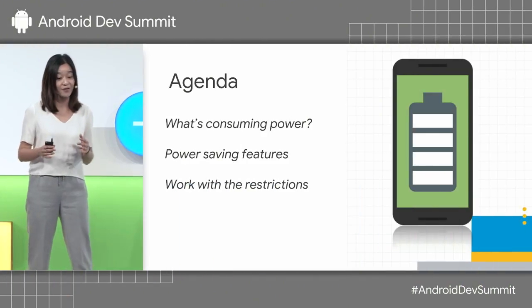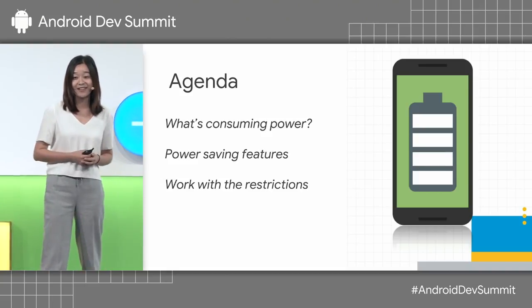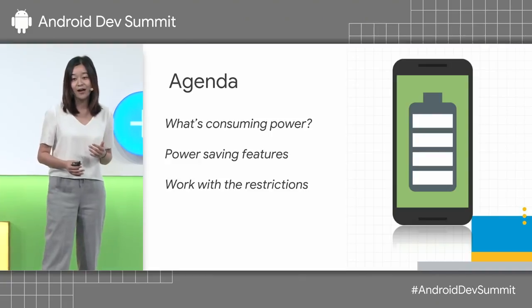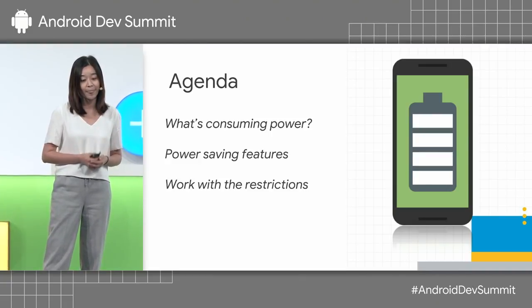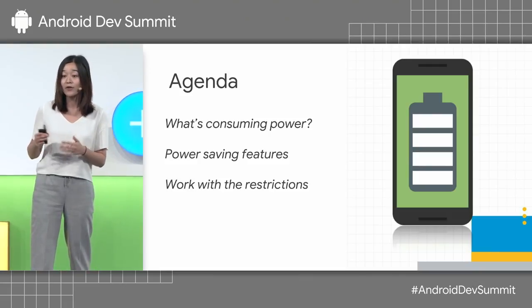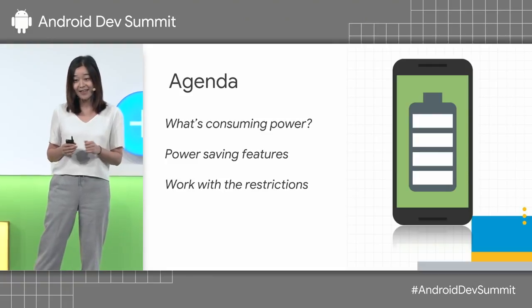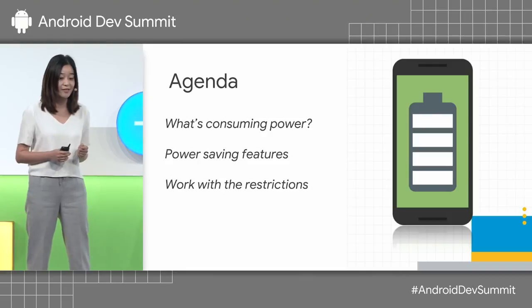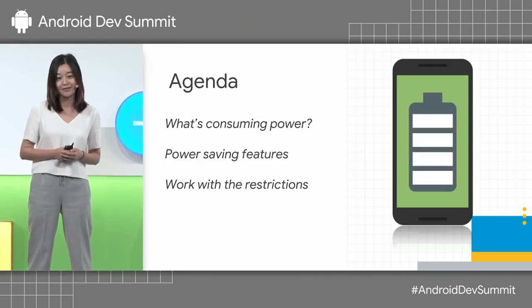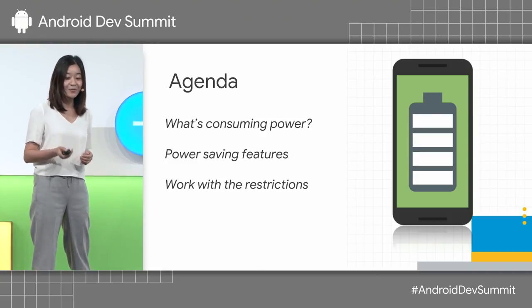So that's why today we're talking about how we are going to improve battery, with your help, hopefully. And this is what we are going to cover. First, we'll talk about what's consuming power and how we measure power consumption. Then we're going to go through the power saving features we introduced in recent years. And in the end, we're going to talk about how your app will be affected by these restrictions and what you can do to work with them. I'll pass it over to Amit to talk about what's consuming power.